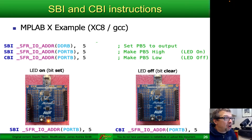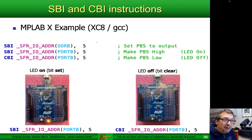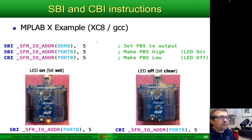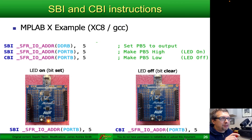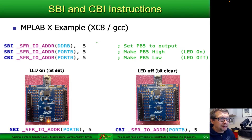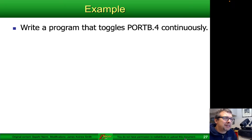Here's an example of lighting up an LED and then turning it off. We do SBI SFRIO address DDRB comma 5 to make it an output, then we set the bit on port B bit 5 to high — you can see the LED lights up. Then we clear port B bit 5, which brings the output low and turns off the LED.